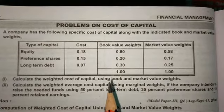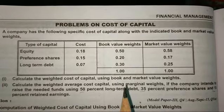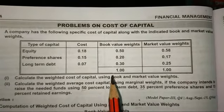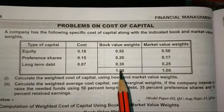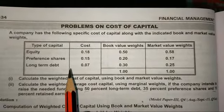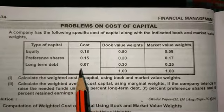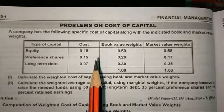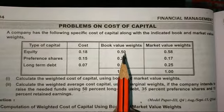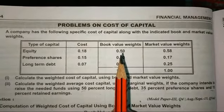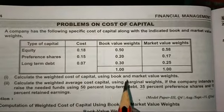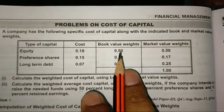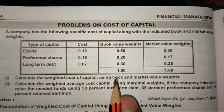I want to tell you one thing: we will be having two types of problems in weighted average cost of capital. In some problems, the weight is going to be given directly. In other problems, they give you the full book value in lakhs or thousands, and we need to divide it to get the weights. In the next problem, I will show you how to do that. But for this particular problem, the weights are given, so we will use them directly.